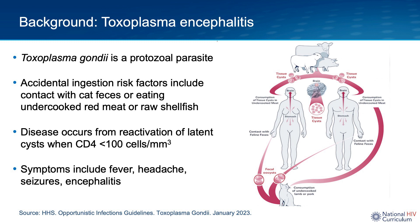Toxoplasmosis is a foodborne illness, and one can get exposed to the organism by accidental ingestion. Risk factors include contact with cat feces, eating undercooked red meat, or raw shellfish. Once accidental ingestion occurs, the organism can form tissue cysts in the brain, the eyes, the myocardium, and the skeletal muscle.